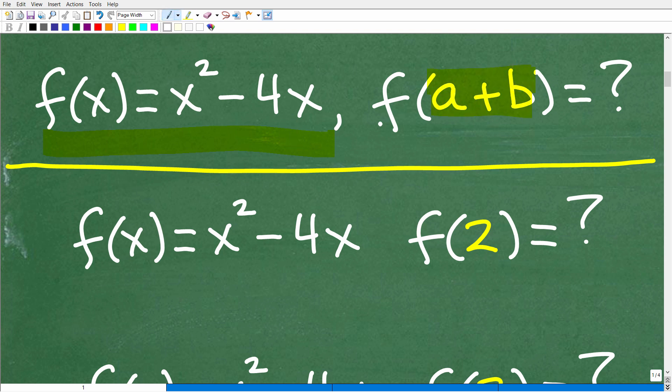But before we do this problem here, let's do a simpler problem, and that's this right here. So we have the same function, f(x) = x² - 4x, but let's evaluate this function for 2. All right, so f(2).